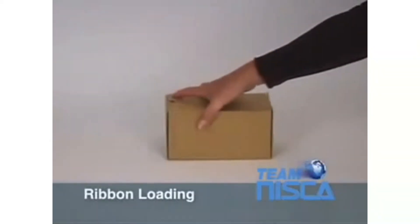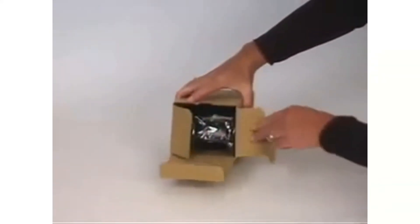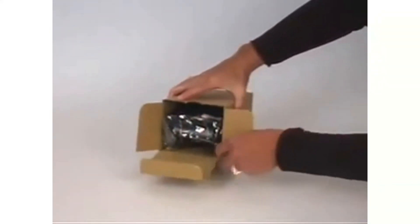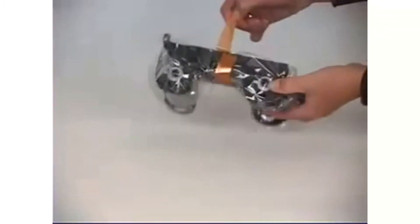Loading media. To unpack the ribbon cassette, simply remove from its box. The cassette should be sealed inside a plastic bag. If your ribbon is not concealed in a plastic bag, please discard and contact your dealer. Remove the ribbon cassette from the bag.